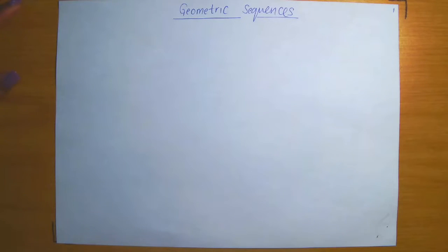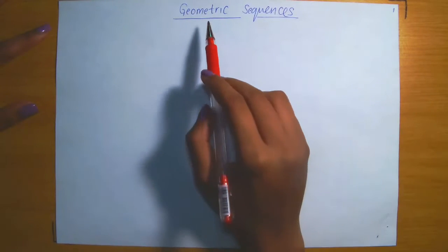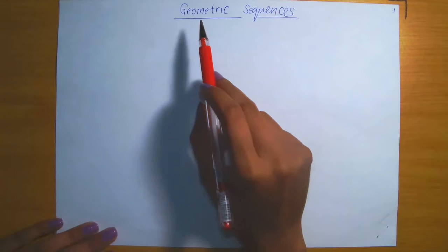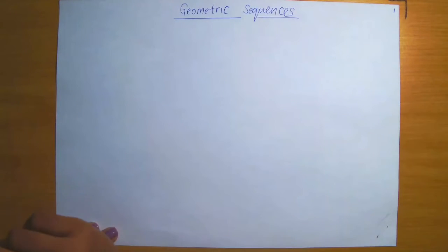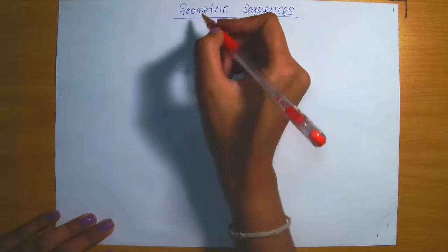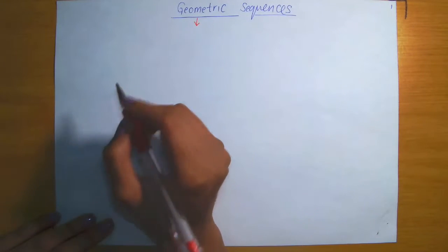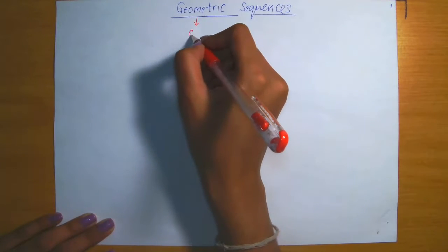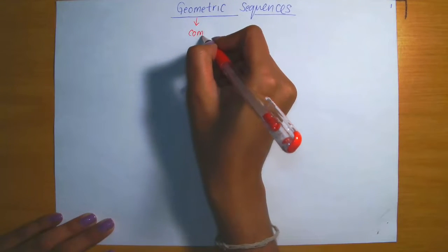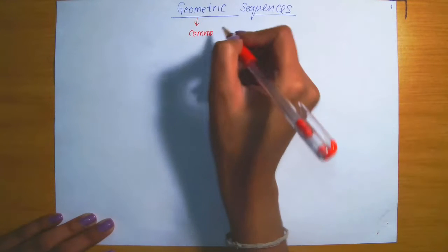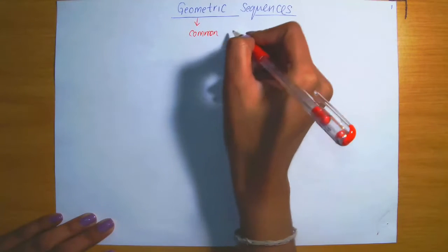In this video lecture, we are going to be discussing geometric sequences. So what is a geometric sequence? A geometric sequence is any sequence that has a common ratio between consecutive terms.